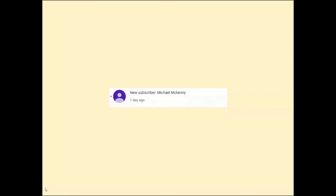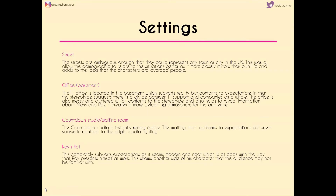So, settings in The IT Crowd — there aren't as many as in things like The Sweeney or Luther, which I've already made videos on. For some of these settings I've grouped a few things together. To begin with, the street: we see this at the beginning with Moss running, but I've also included the street outside of the Eight Plus Club, the street view when Roy is on the bike, and the street view when he's traveling with the window cleaner.